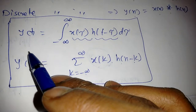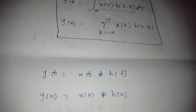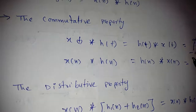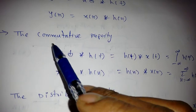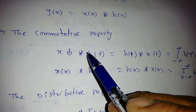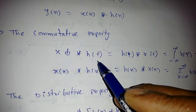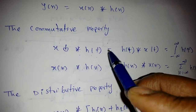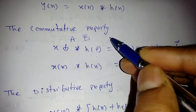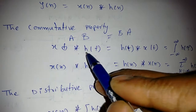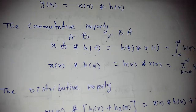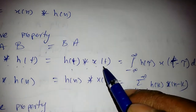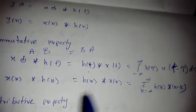Before finding the output response, let's see some properties of the convolution integral and sum. The first property is the commutative property: X of T convolved with H of T is also equal to H of T convolved with X of T. This is like A times B equals B times A. The integral becomes minus infinity to infinity of H of tau times X of T minus tau d-tau.